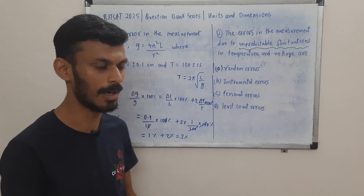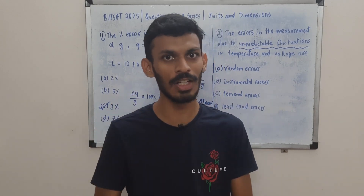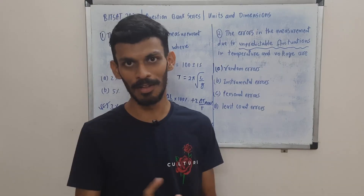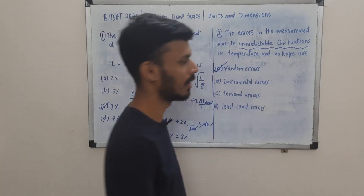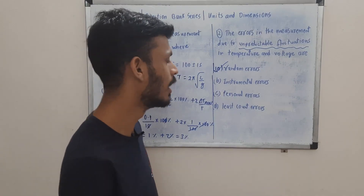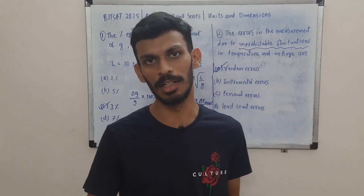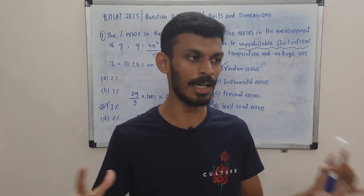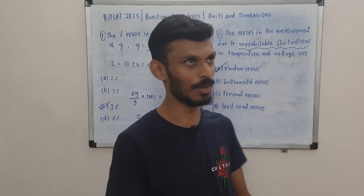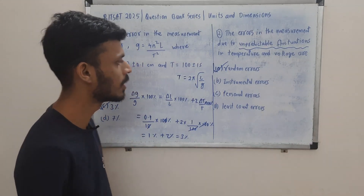Suppose a vernier caliper — it has some least count and cannot measure decimal places beyond that; that's the very nature of that instrument. Those three error types are quite systematic. The unpredictable fluctuations refer to random errors. One more key fact: in order to reduce random errors, you can take multiple readings and then take the average, so that you reduce the randomization. Every time there is some random error, since the errors are random, they cancel each other out when you take the mean.